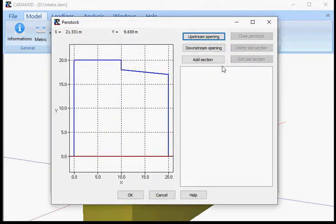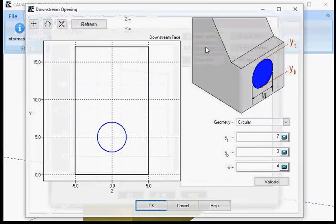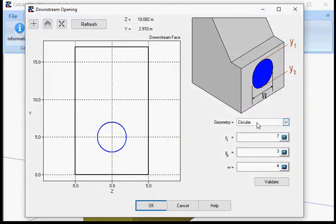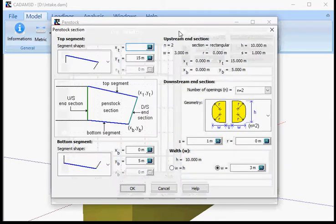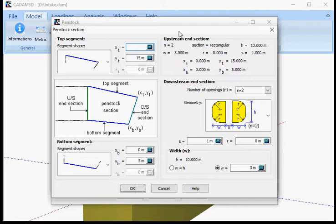You can go up to three openings. Then you have to define the downstream opening, same thing if it's circular or rectangular. You just put the numbers here and you click validate. After that you add section. This is where it gets a bit complicated, but not that much.